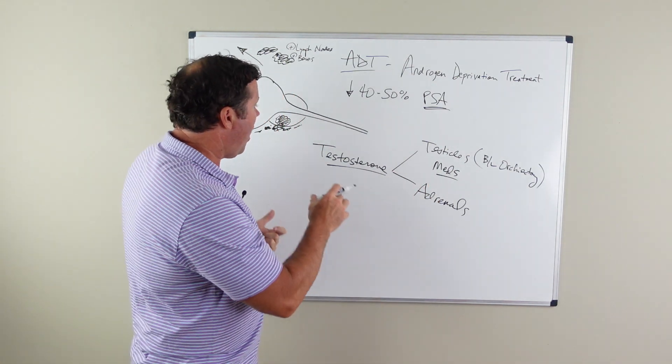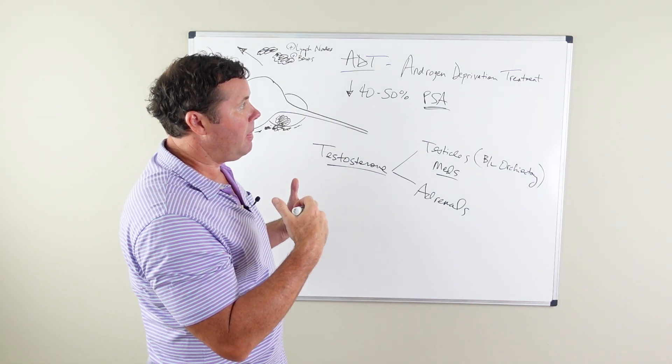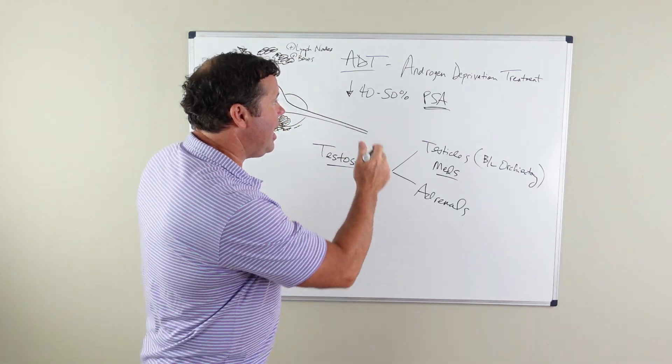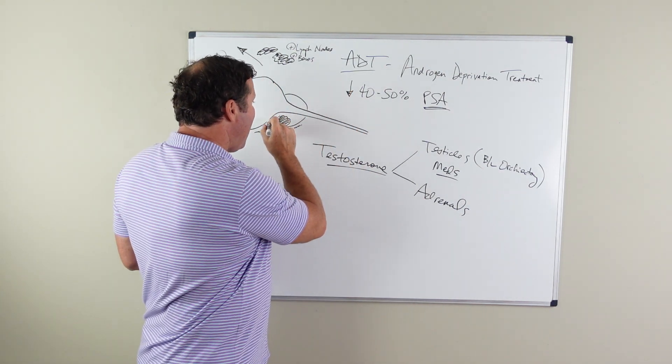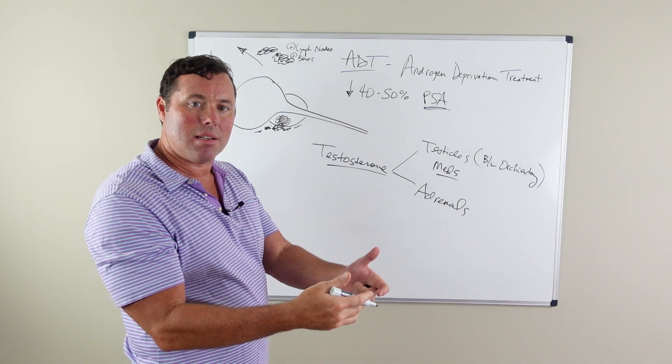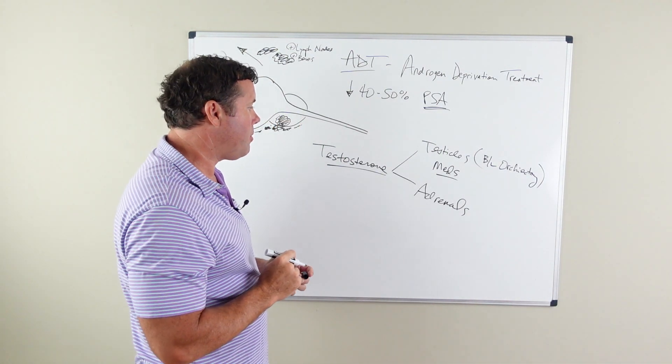Oftentimes with cancers that are treated with radiation, ADT is used not only to shrink the prostate, but it's also used to make this cancer more sensitive to the radiation or to whatever energy you're delivering to that prostate.